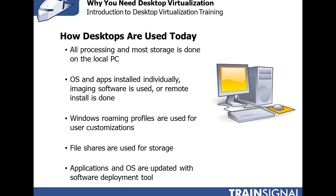At most companies today who aren't using desktop virtualization, they've deployed desktop or laptop computers to their end users. On those desktop computers, processing is done at the application level, and most user data is stored locally on the computer. The operating system and applications may have been individually installed on every desktop or laptop, or they may have used imaging software or remote installation. In many cases, Windows roaming profiles are used for user customizations and file shares.